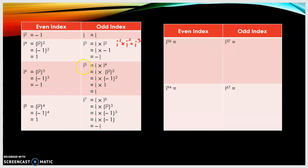For i to the power of 5, we write i times i to the power of 4. From i to the power of 4, we change to (i²)², and negative 1 to the power of 2 is positive 1, so the answer is i. For i to the power of 7, we write i times i to the power of 6. Reducing i to the power of 6 similarly, and multiplying gives negative i. For odd index, this is the method to follow.